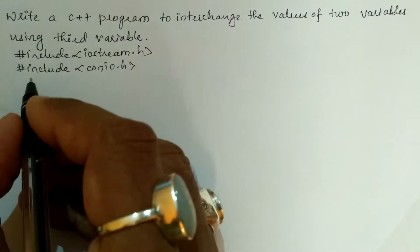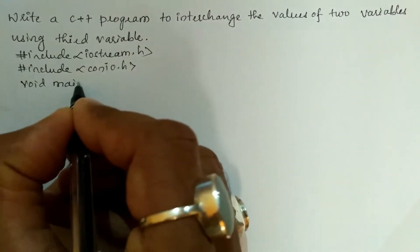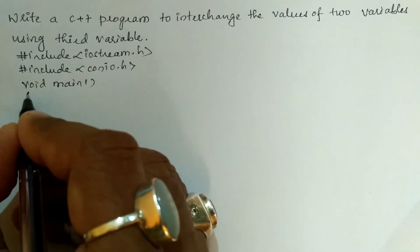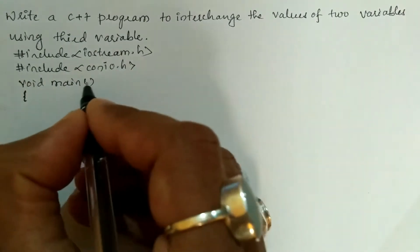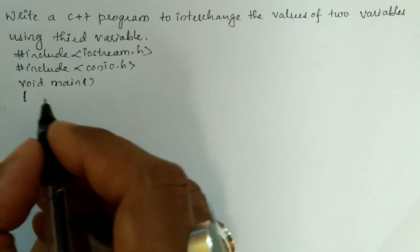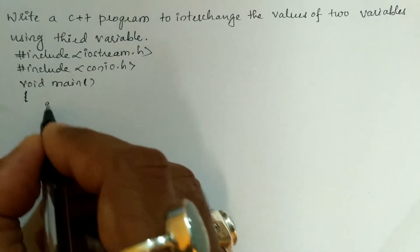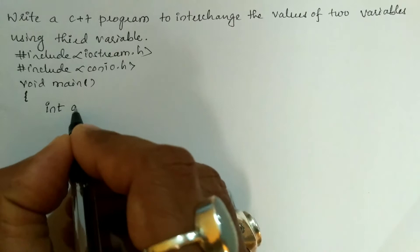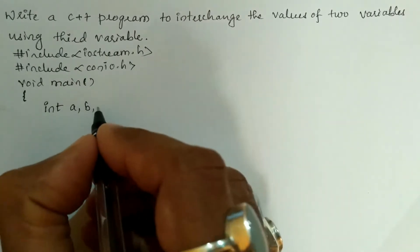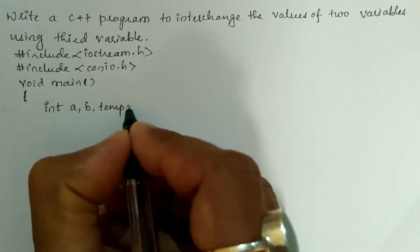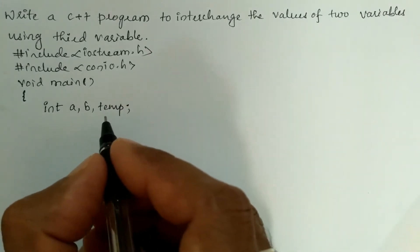Now let us write the void main function with a curly open brace. In the declaration section we are going to declare all the necessary variables with data type int — variables a and b — and a third variable called temp, which is a temporary variable.